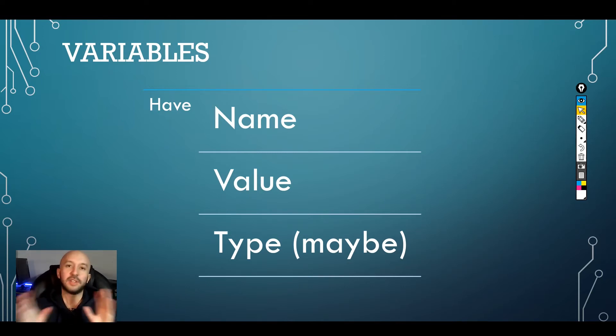For now, just trust me, we will work with variables that have type and later on I will explain why some programming languages use type and others not. What is a name? A name is how you are going to access the variable. You need to have a way to reference that variable to access the value it has.